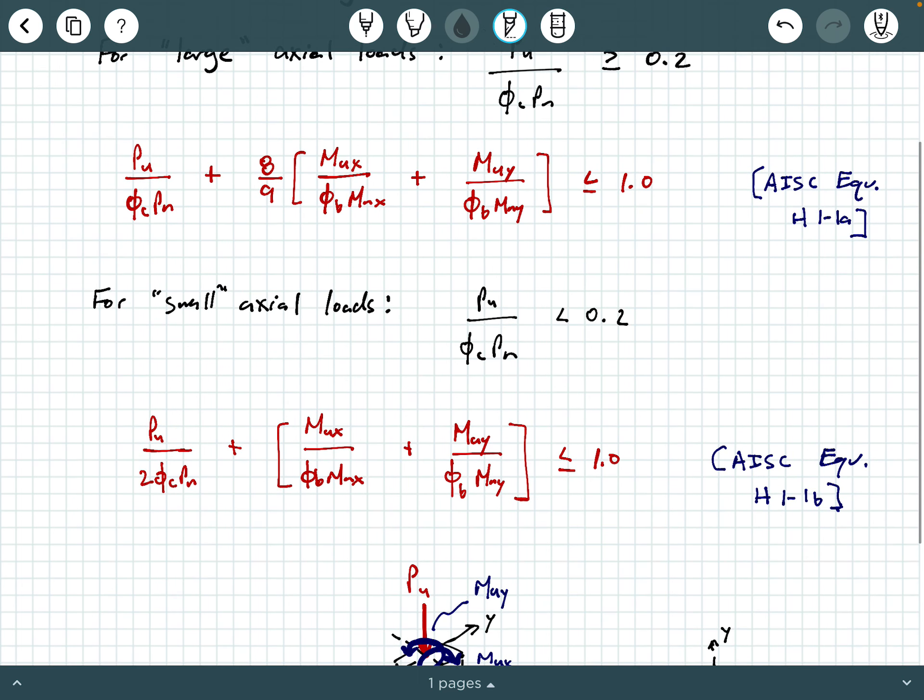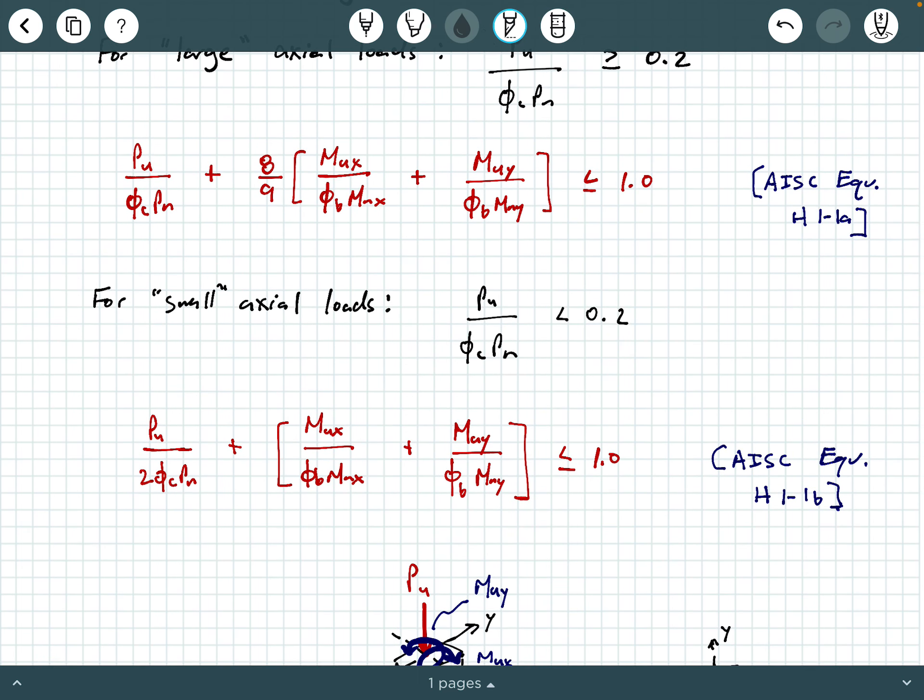Now, these interaction equations account for the possible presence of both of these moments. But if one of these moments is zero, no problem. You evaluate the situation and let's say the MUY term is zero. Let's just say you have uniaxial bending, then one of these entire terms would just go to zero. No problem at all. So these are just meant to be general equations that account for the possibility of having two moments about your two cross-sectional axes. But if you don't, then one of these two terms will just be zero and you'll just be left with your axial term and then one of the moment terms.